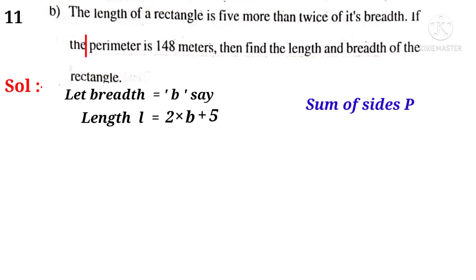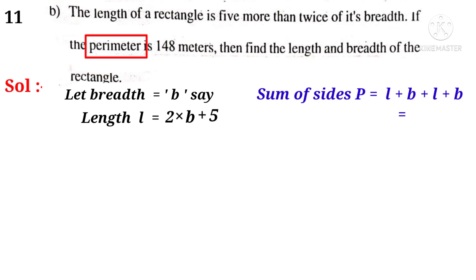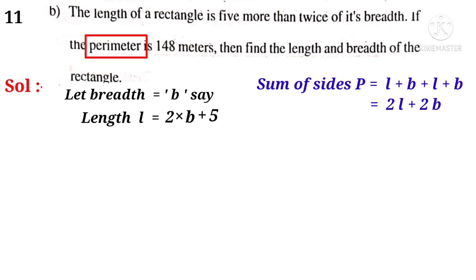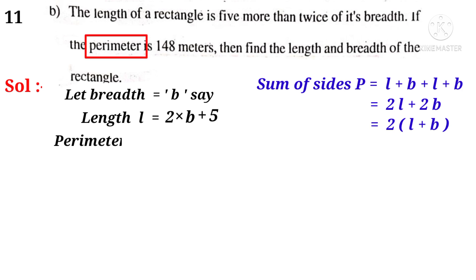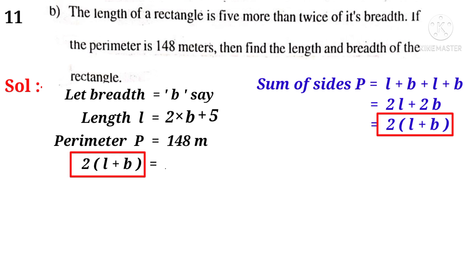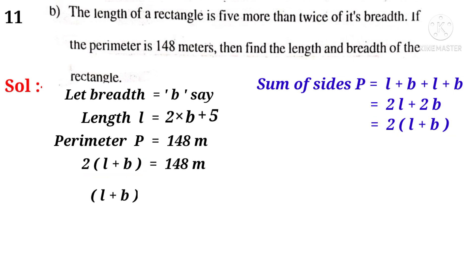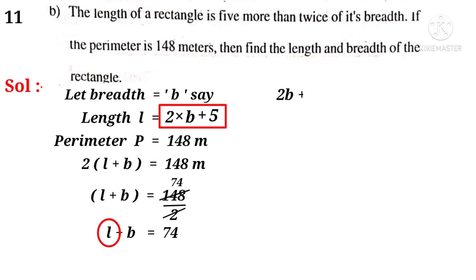Perimeter P is equal to l plus b plus l plus b, that is equal to 2l plus 2b, which is 2 into l plus b. But perimeter p is equal to 148 meters. So, 2 into l plus b is equal to 148. So, l plus b is equal to 148 by 2. On simplification by 2, 74 times. That is equal to 74 meters. So, l plus b is equal to 74. Write 2b plus 5 in place of l. That is, 2b plus 5 plus b is equal to 74.